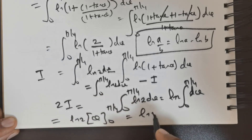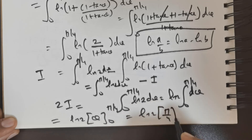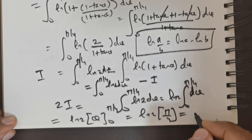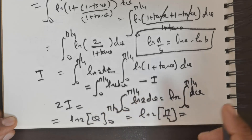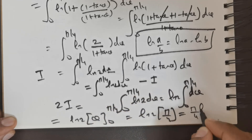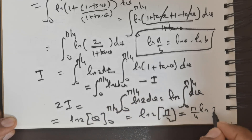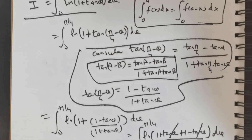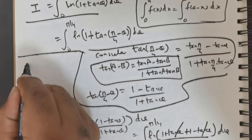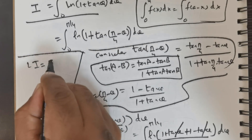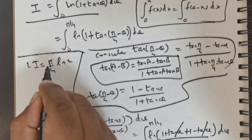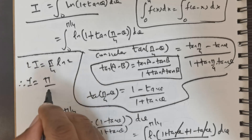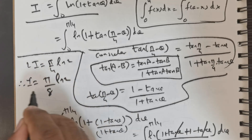Substituting the upper limit gives π/4, and the lower limit contributes 0, so 2I = (π/4) ln 2. Therefore I = π/8 · ln 2.